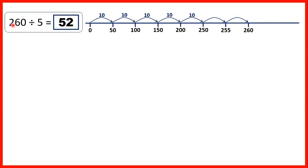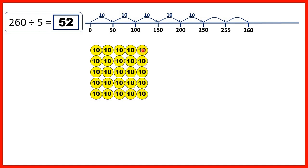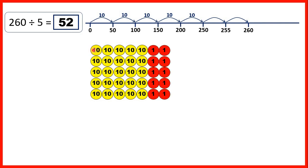Then 260 divided by 5. We made 5 jumps of 10 times 5, so we show 5 tens in each row. Then we made 2 jumps of 5, so we show 2 ones in each row. That gives us 52 in each row. If we regrouped the counters, we'd be able to make 260 — because we can regroup 10 tens into a 100 and 10 ones into a ten.